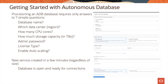Welcome back. Let us now look at provisioning an autonomous database in Oracle Cloud Infrastructure. Provisioning an autonomous database requires only answers to seven simple questions: pick a data center region, name the database, select how many CPU cores to allocate and how much storage capacity you need, select the license type, whether to enable auto scaling, and give a password for the admin account. Once you click 'Create Autonomous Database,' a new service will be created in a few minutes and the database is open and ready for connections.